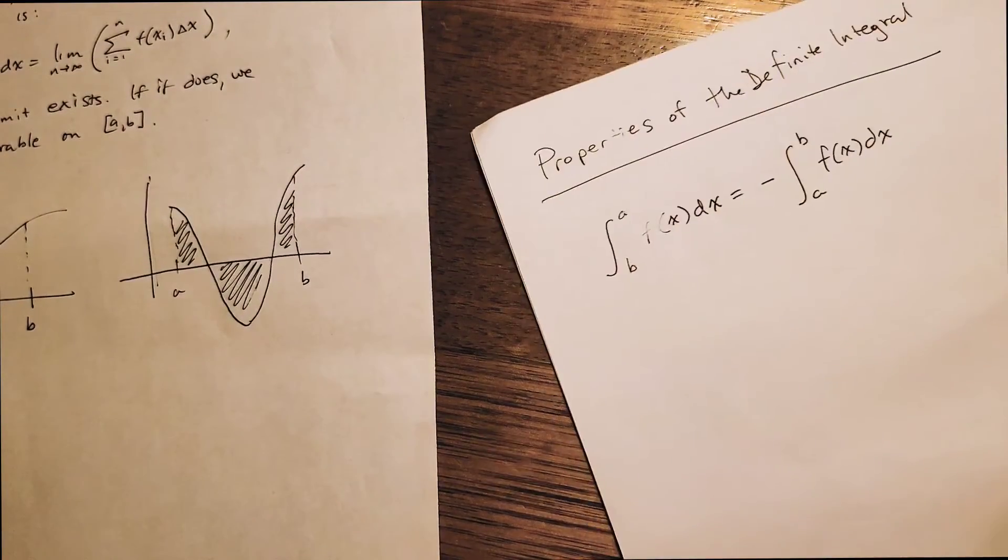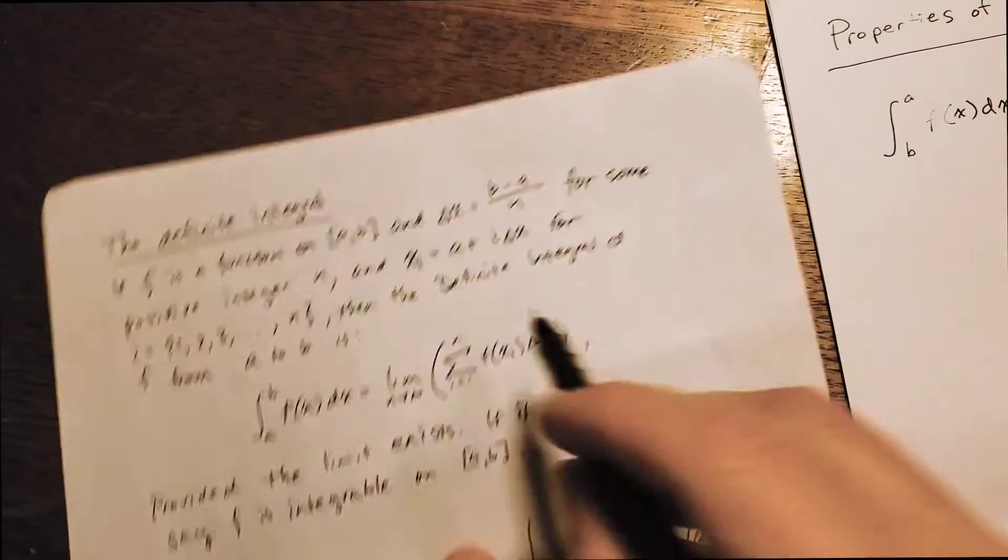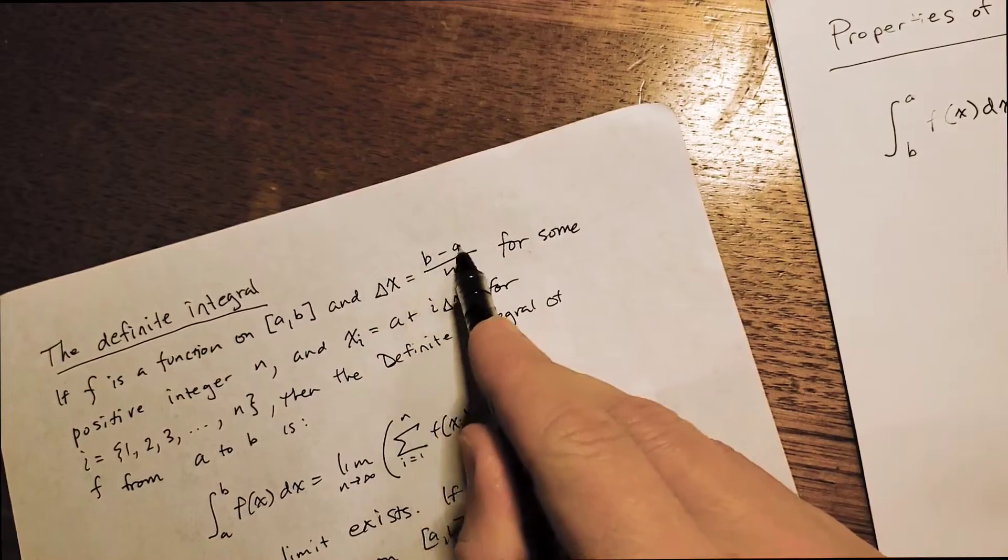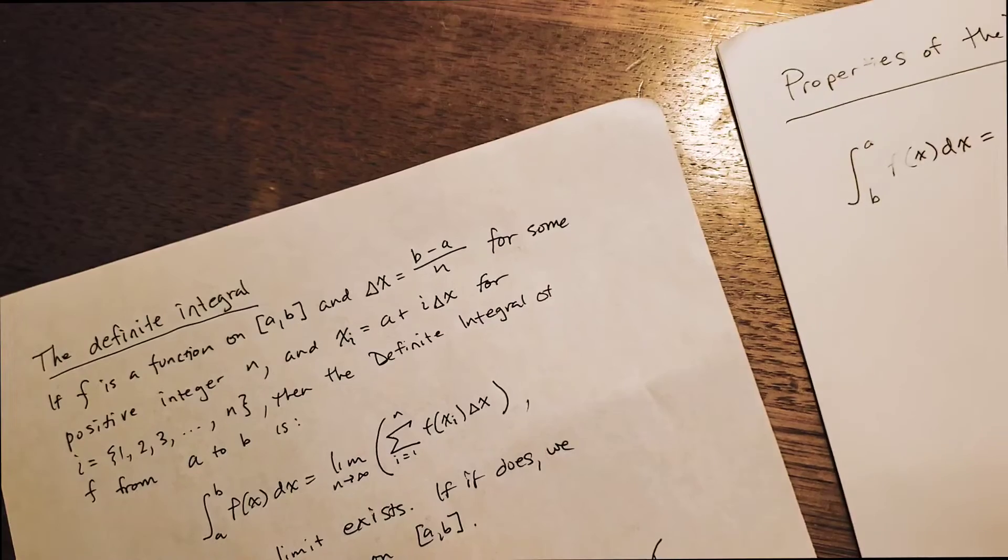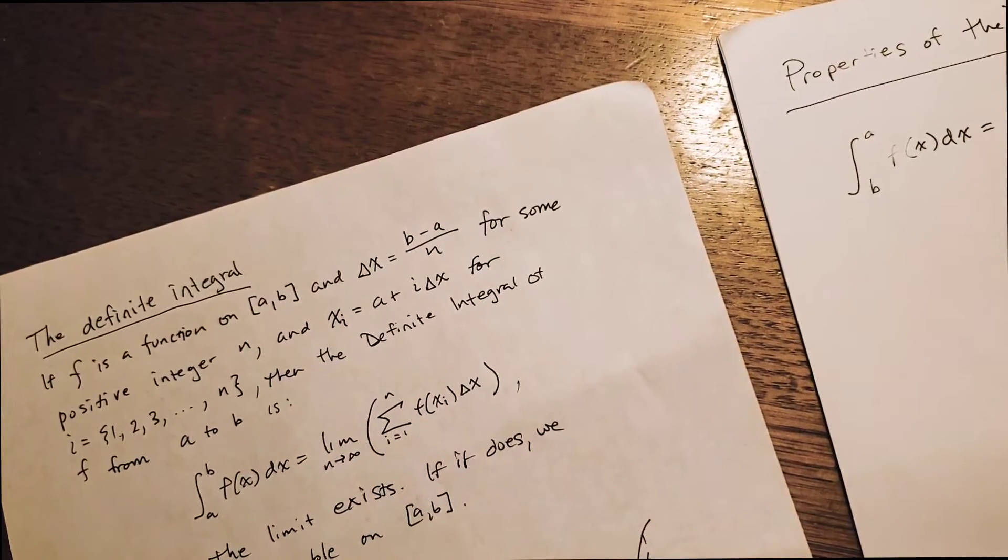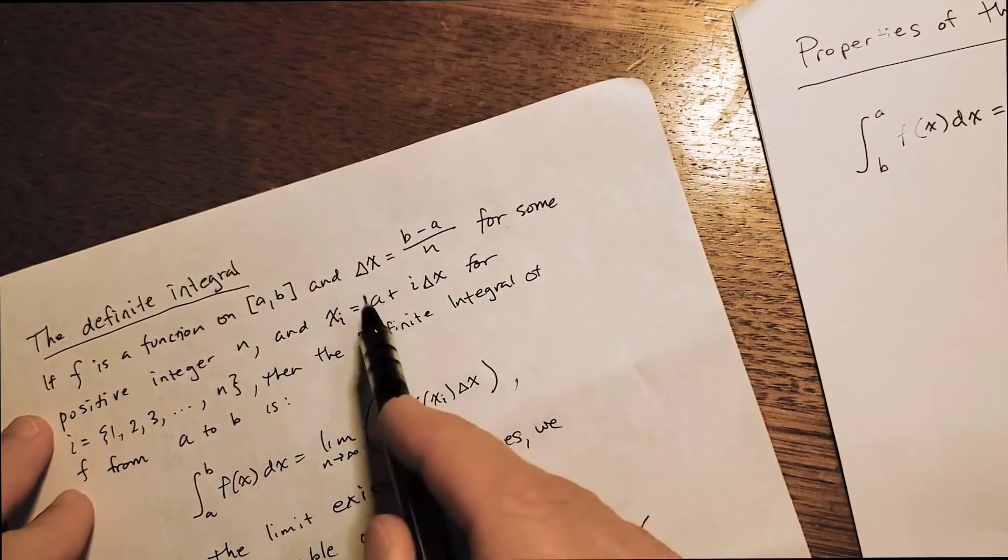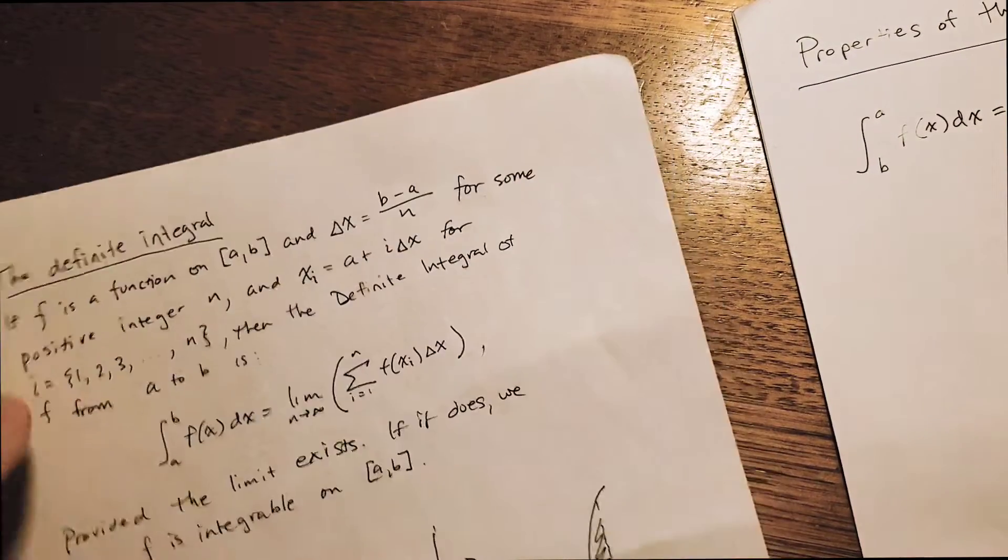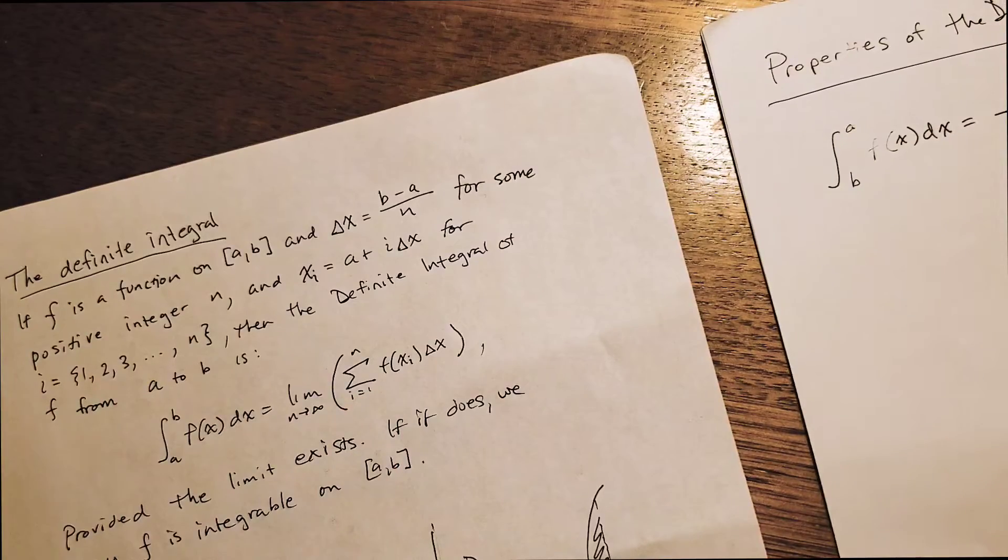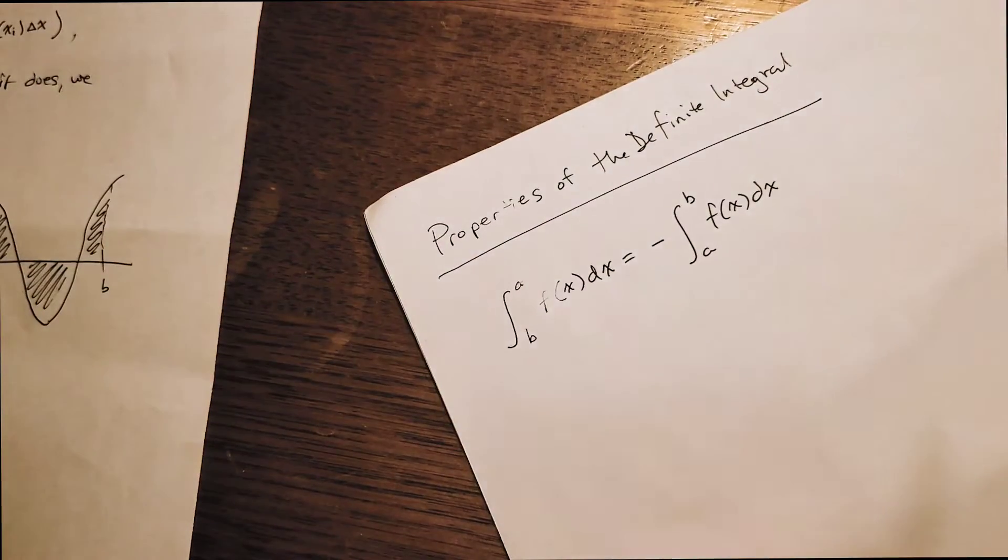I think the easiest way to understand that or just remember that is to look at this definition. It switches the order of B minus A, this becomes A minus B. And when we switch the order of a subtraction problem, we always pick up a negative sign. And so it'll switch the sign of the whole limit. At each sum, we'll get a negative sign or lose a negative sign, whatever the case may be. So we get the opposite of the original.